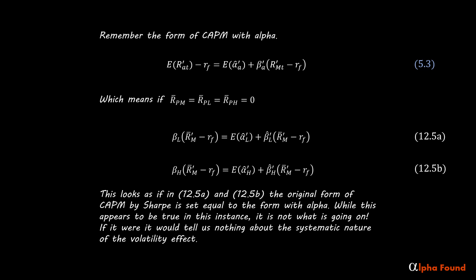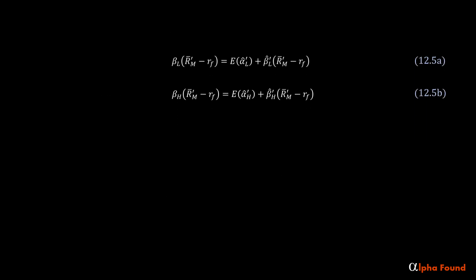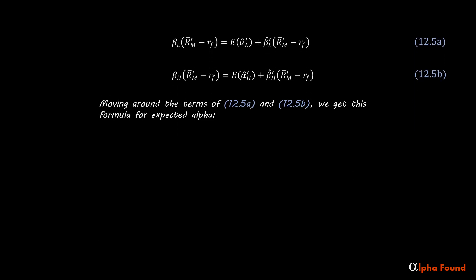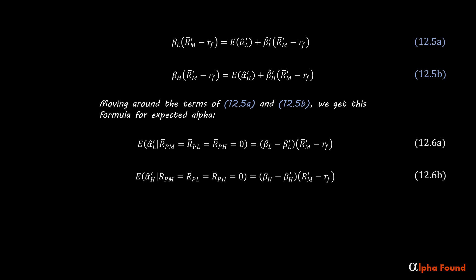Remember the form of CAPM with alpha, which means if the average perturbations are zero, the return of the low CAPM beta portfolio using the ideal expression can be set equal to the return using the CAPM expression, including an alpha term. This looks as if in 12.5 A and B the original form of CAPM by Sharpe is set equal to the form with alpha. While this appears to be true in this instance, it is not what is going on — if it were, it would tell us nothing about the systematic nature of the volatility effect. Moving around the terms of 12.5 A and B, we get this formula for expected alpha. Although we are assuming for the time being that the average perturbation for all portfolios is zero, it is likely that the individual time periods have non-zero perturbations. This will make all the difference.